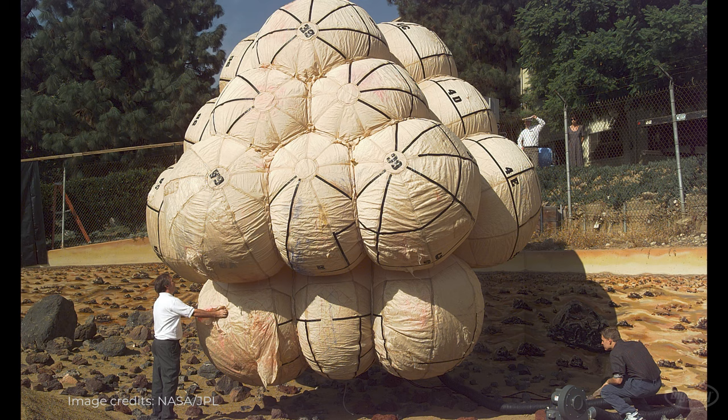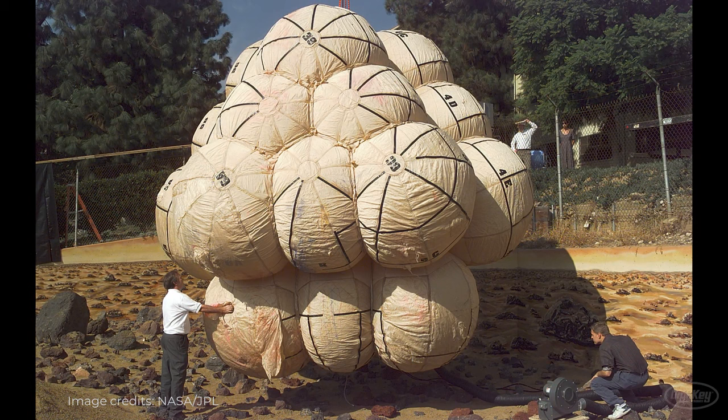Landing consisted of a unique combination of parachute, deceleration rockets, and a set of airbags to slow the descent of the Carl Sagan Base Station and Sojourner rover.